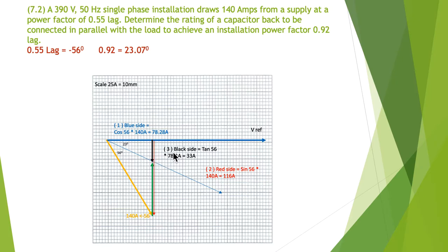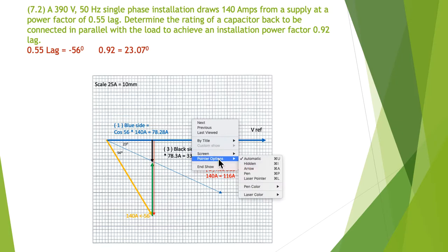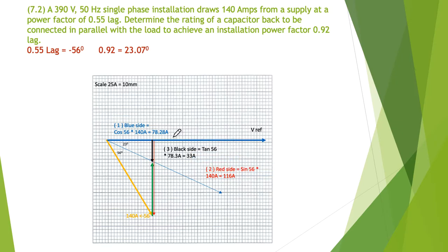I'm taking tangent of 56 degrees multiplied by 78.3 to get that side of the triangle, giving me 33 amps. Now that I've got the black side and the red side, I can subtract the two.